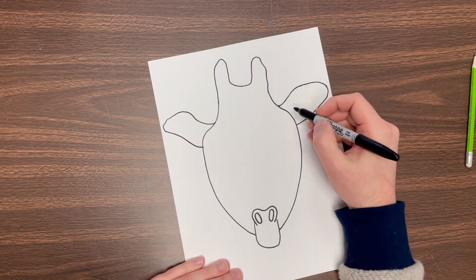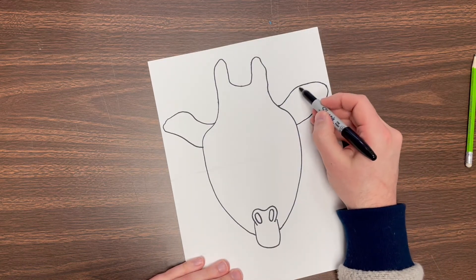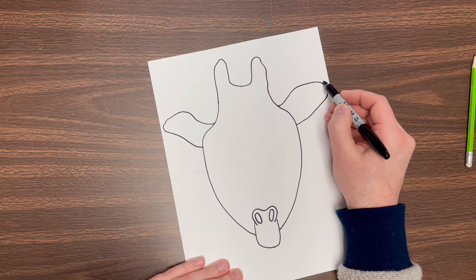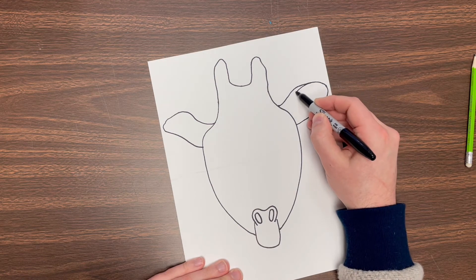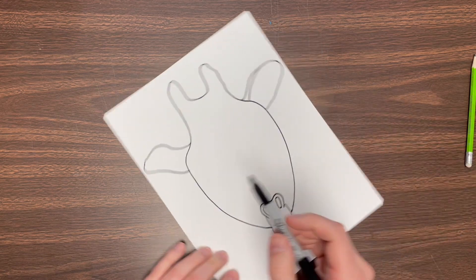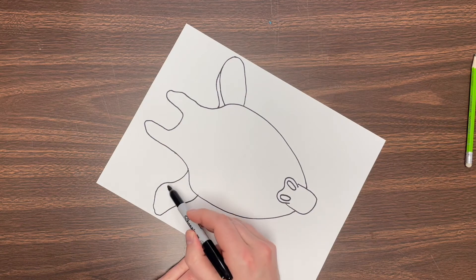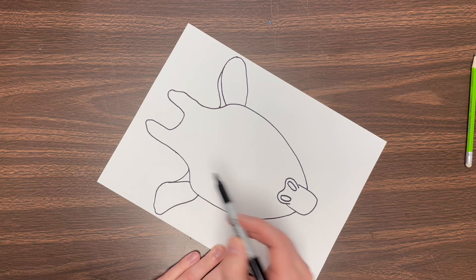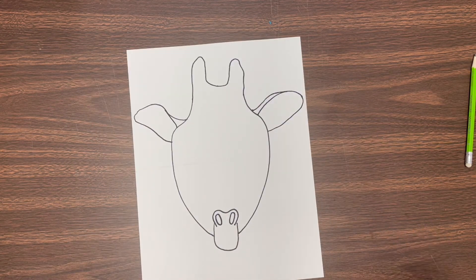Then we're gonna make just a little, we're gonna follow this curve so it looks like that ear is kind of folding over. I'm gonna do one of these and I'm gonna do that over here too, just follow that so it looks like the ears folded a bit.